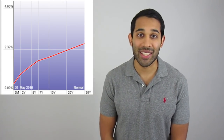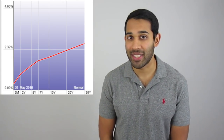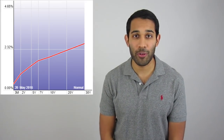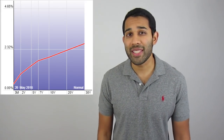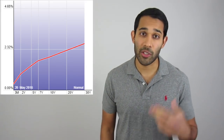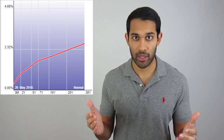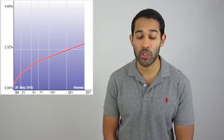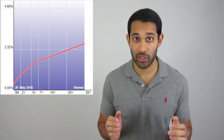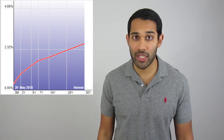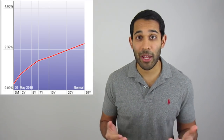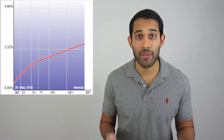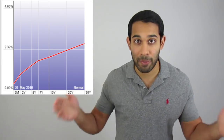The yield curve is basically just a line that plots the yield of US treasury bonds with different maturity dates. The curve lets you easily compare rates on short-term bonds versus long-term bonds. In this chart you can see that long-term bonds are yielding more than short-term bonds. The line rises from left to right, and when this is the case it's called a normal yield curve. A normal yield curve signals that the economy is expanding.